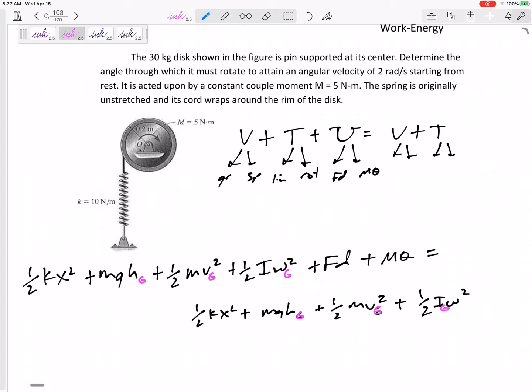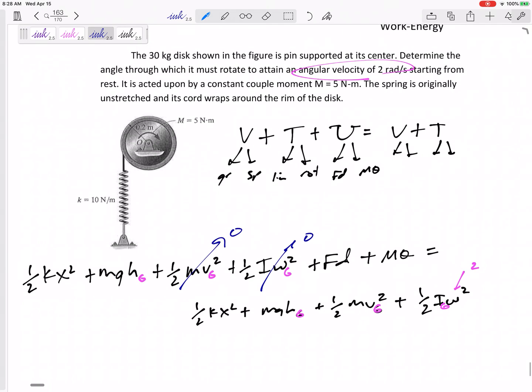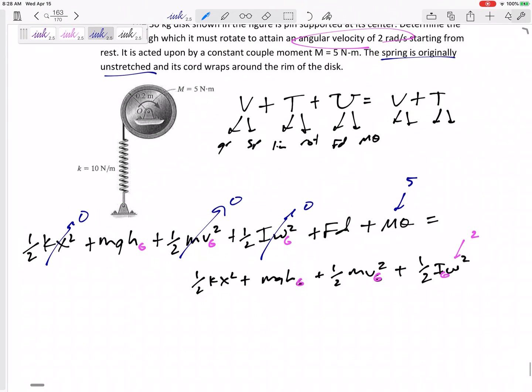30-kilogram disc is pin-supported at center to determine the angle through which it must rotate to attain a final angular velocity of two radians per second starting from rest. Starting from rest, then both the linear and kinetic energy would be zero. It's acting on by a constant moment of five. Originally unstretched. So, originally that x is zero.